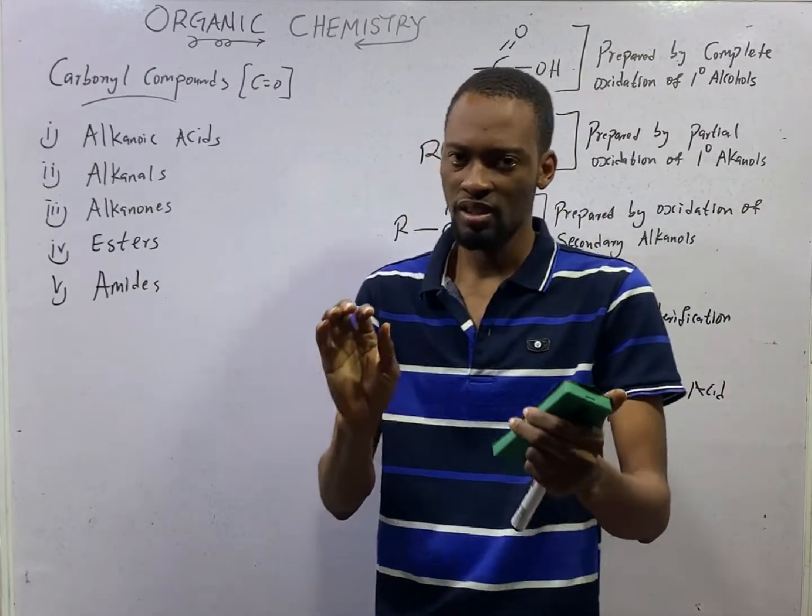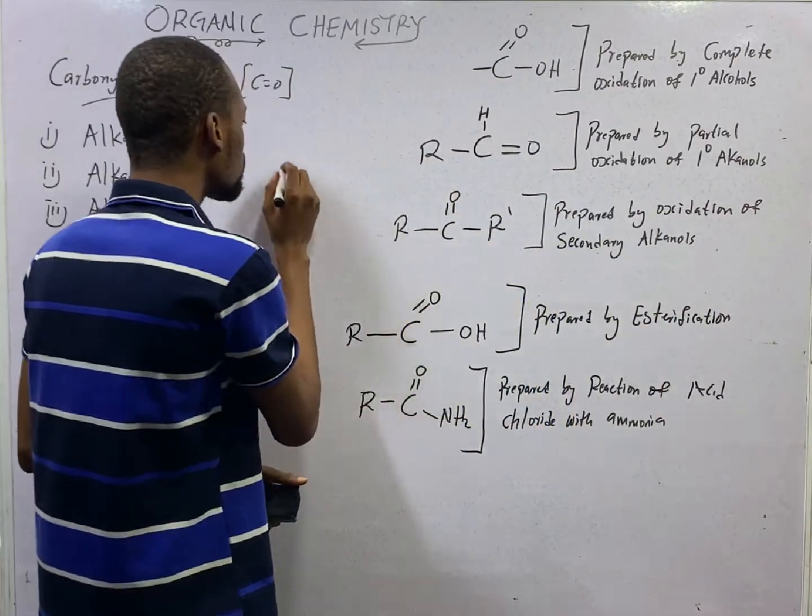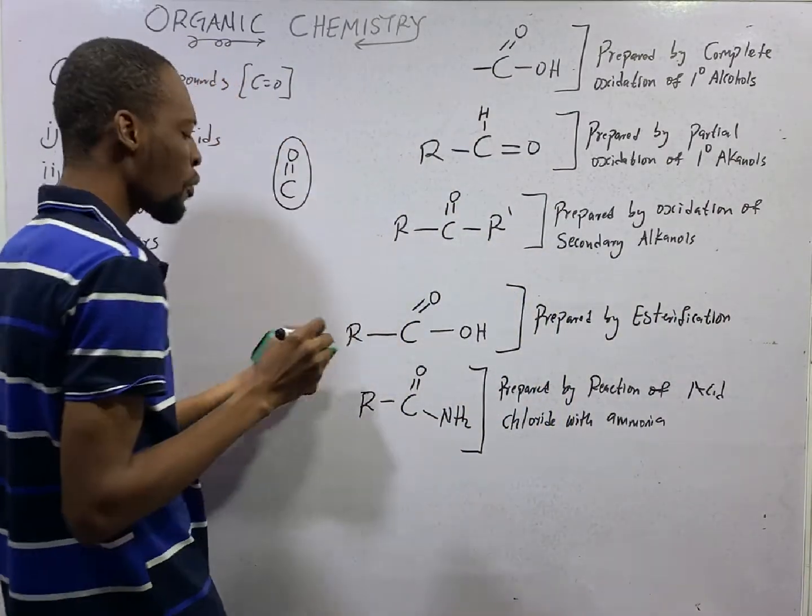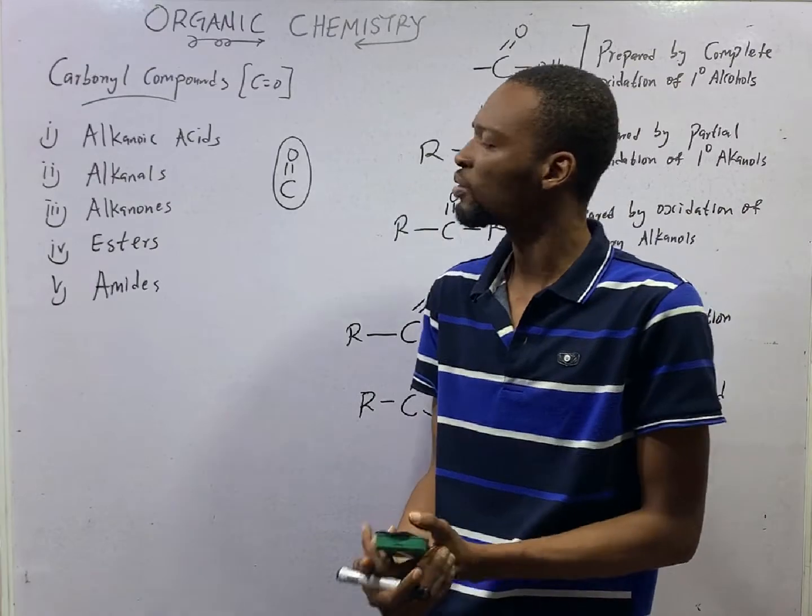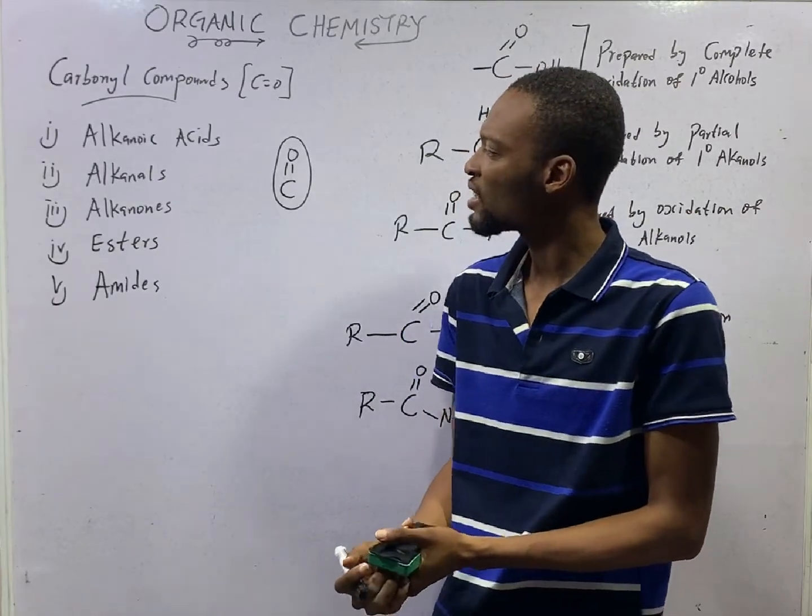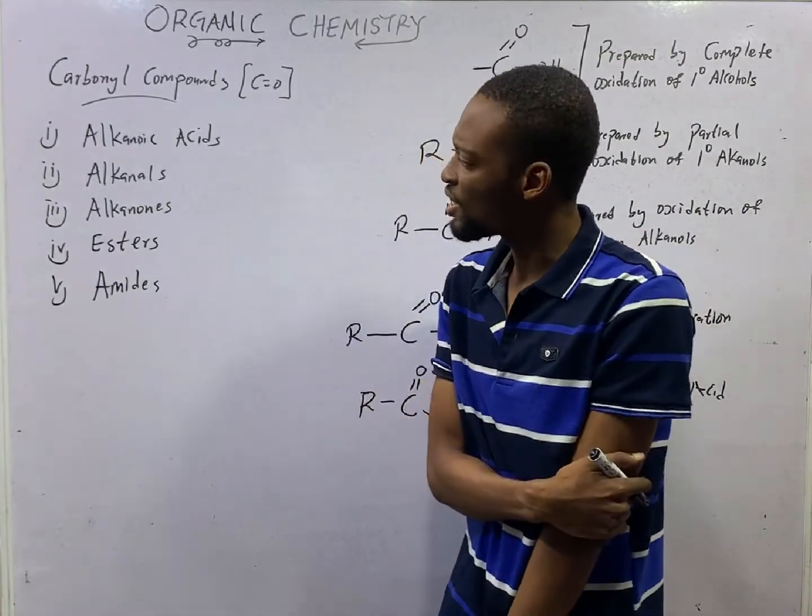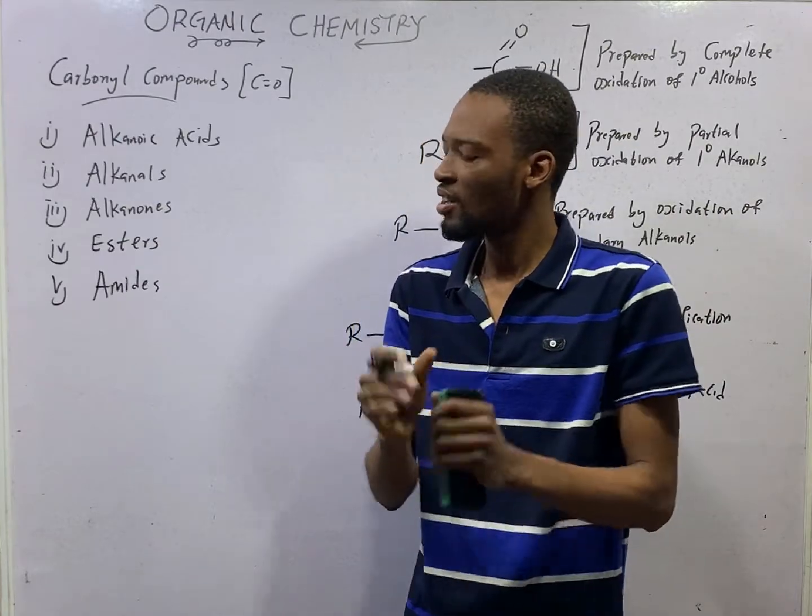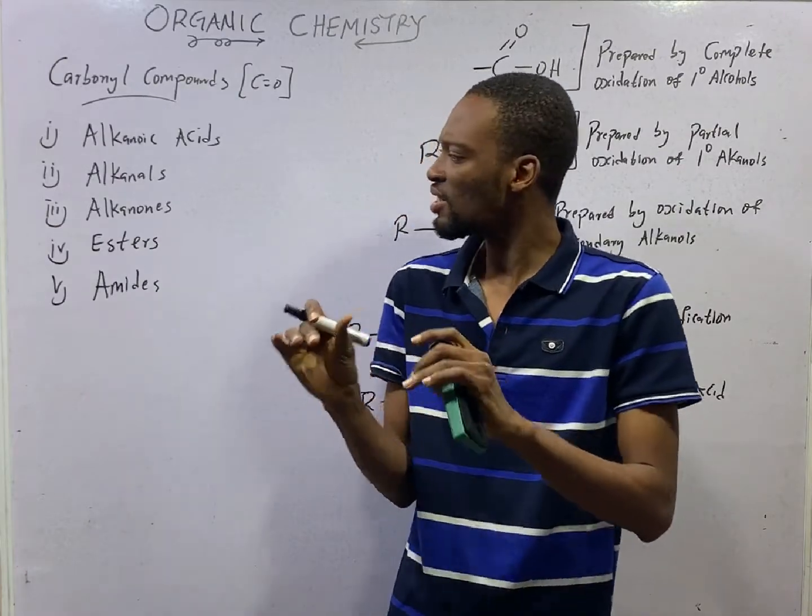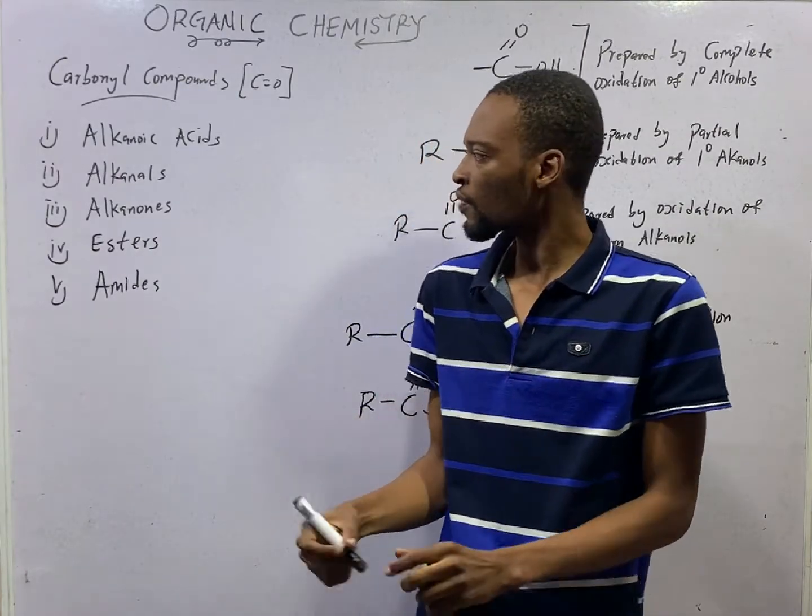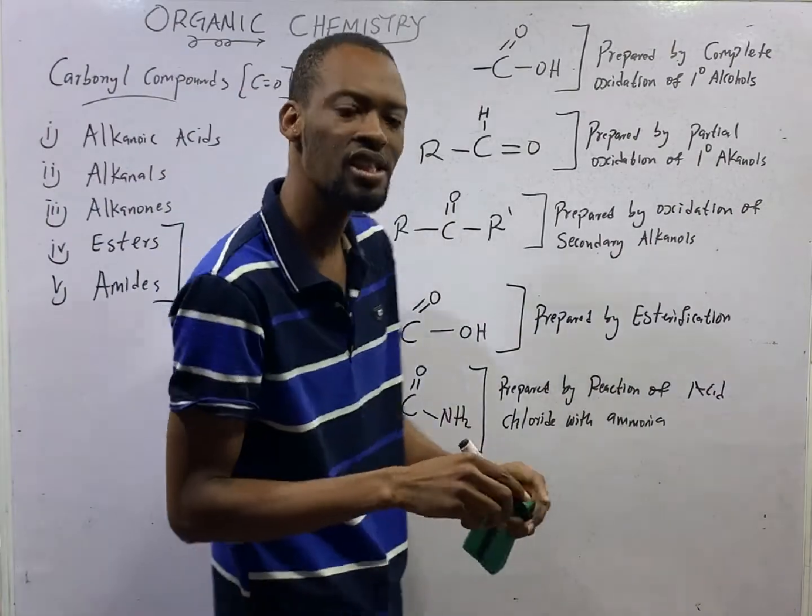Any time you see a compound or in the functional group of an organic compound, there is carbon to oxygen bond, something like this, this compound is a carbonyl compound. A compound where there is presence of carbon double bond to O is a carbonyl compound. Examples of carbonyl compounds are alkanoic acids, alkanals, alkanones, esters, and amides. These carbonyl compounds are referred to as alkanoic acid derivatives.